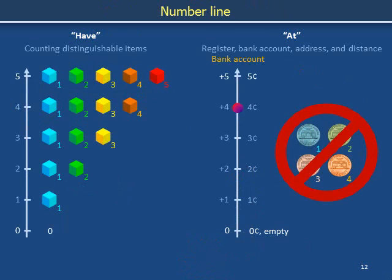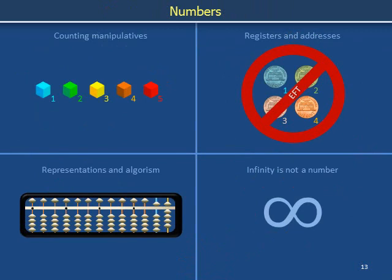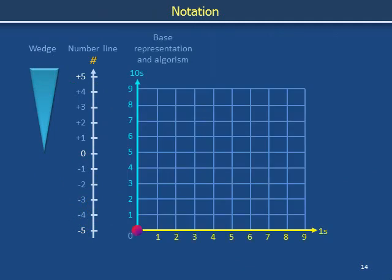The number line is a tool common to both the 'have' and the 'at' pictures. There are other ways to represent this same idea. We can use a wedge. We can also use place representation by accordion folding the straight number line back and forth on itself, introducing a crease every 10 numbers. For example, the number 24 is represented as two vertical steps — two 10s — and four horizontal steps — four 1s. The number 35 is represented as three vertical steps, three 10s, and five horizontal steps, or five 1s.